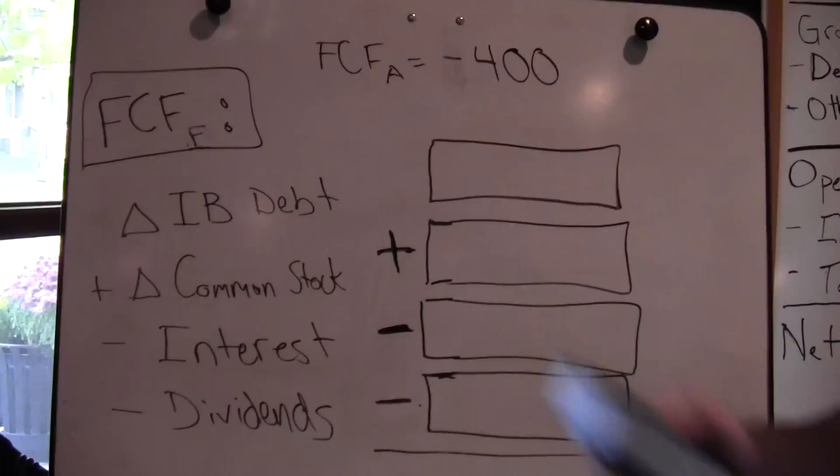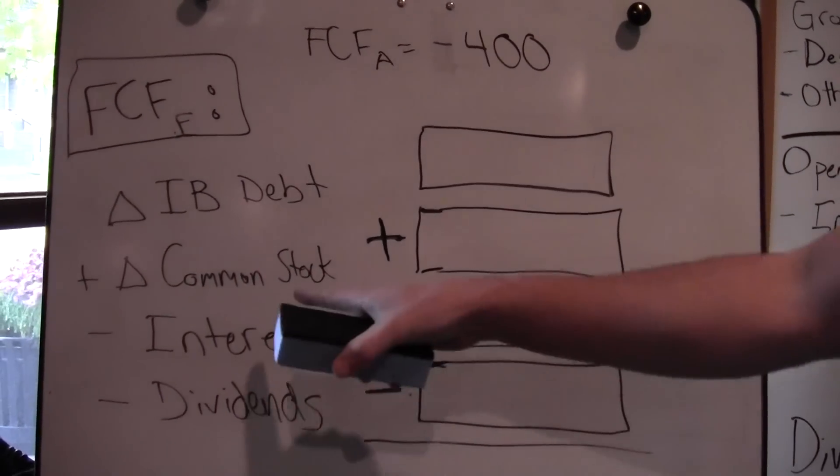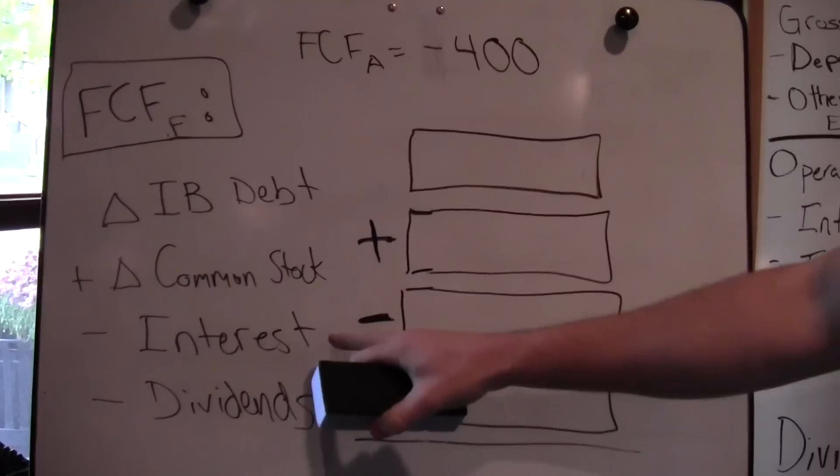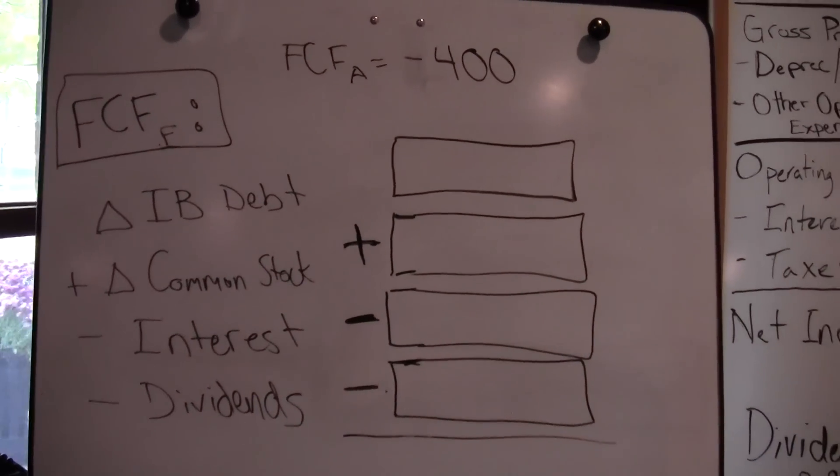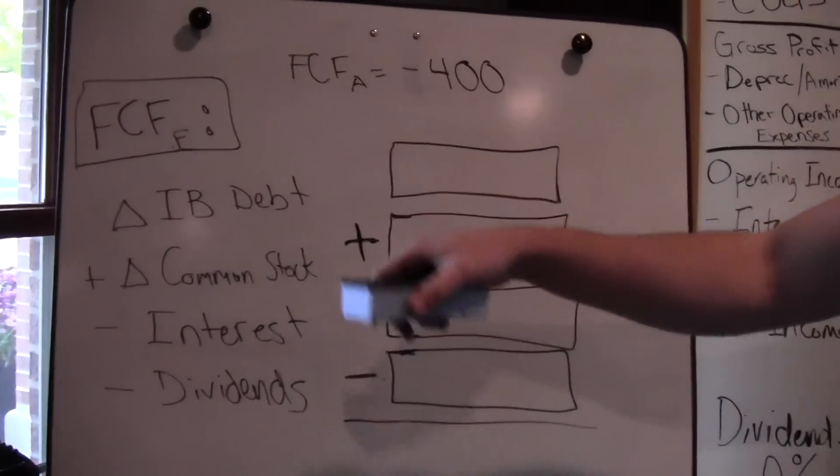This is our equation: change in interest-bearing debt plus change in common stock, minus interest that we pay out, minus dividends that we pay out. Let's start with our change in interest-bearing debt.